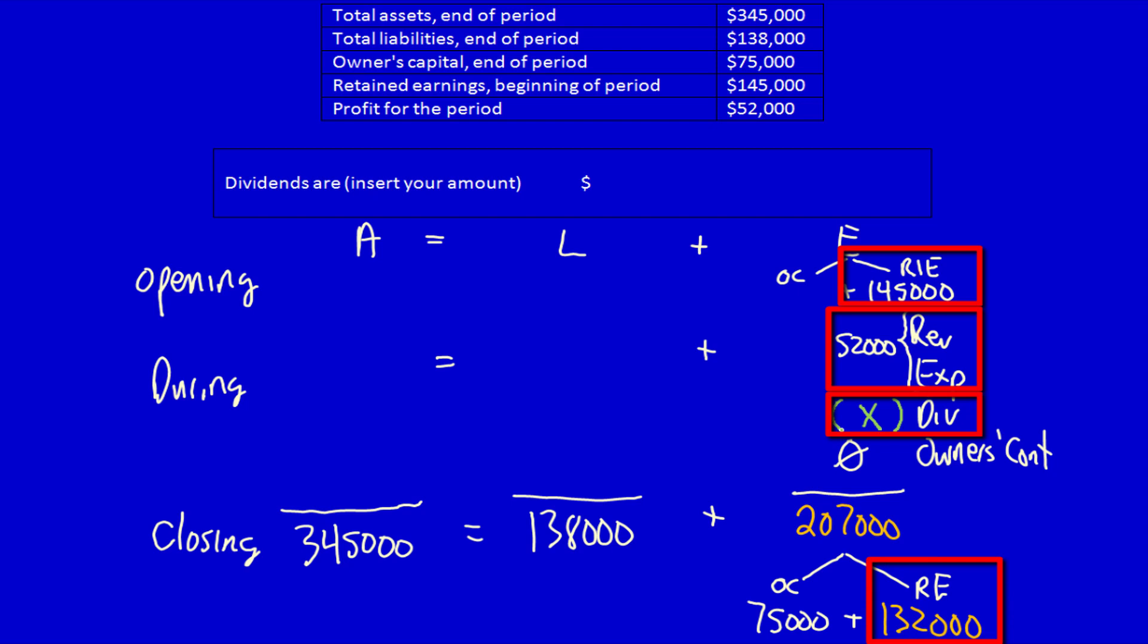So $145,000 plus $52,000 minus $132,000 will solve for x and we'll know the dividends. And the dividends are equal to $65,000.